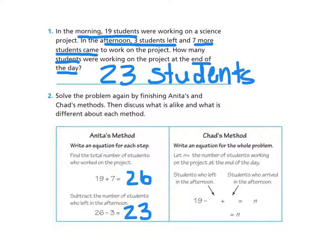Now let's look at Chad's method. Chad solved the equation a little differently. It says: write an equation for the whole problem. So instead of doing two separate problems, he made one whole problem. It says: let n equal the number of students working on the project at the end of the day. He started with 19 students, because there were 19 students in the morning. Then in the word problem it said 3 students left, so that's where the minus 3 goes.